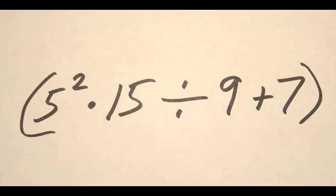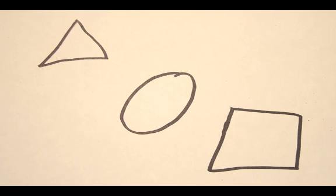For basic algebra, we're talking about order of operations, parentheses, and exponents, as well as those other operations, and helping you solve equations. And basic geometry — not talking about the proofs necessarily, but we're talking about finding perimeter, area, and volume of various shapes.